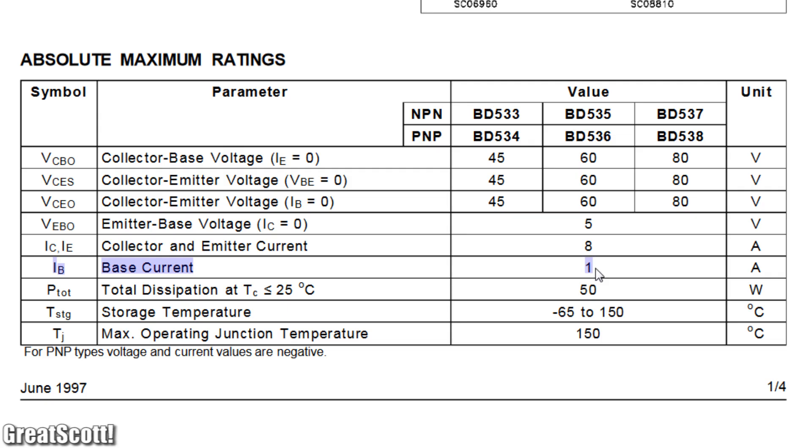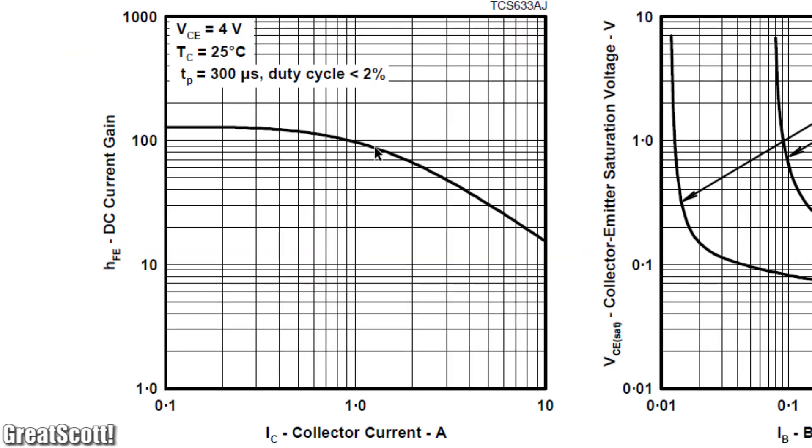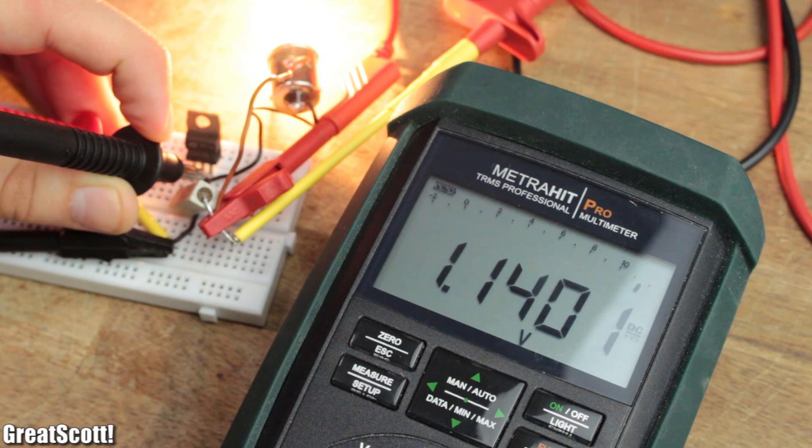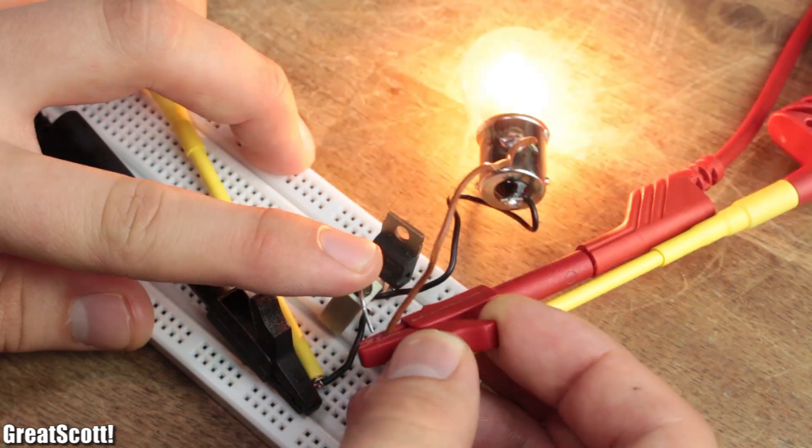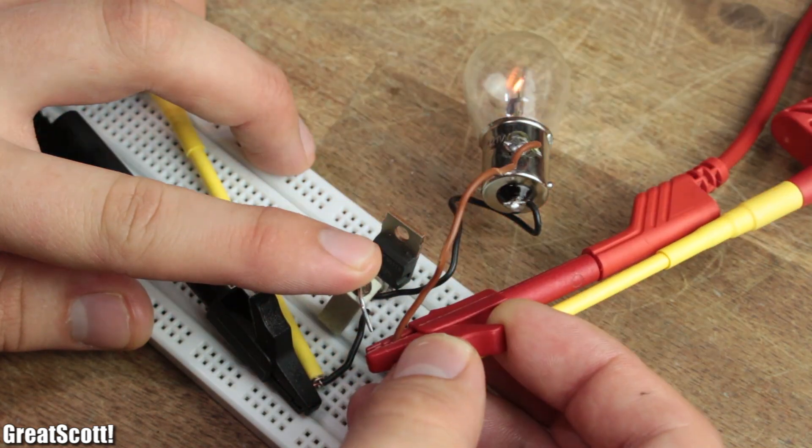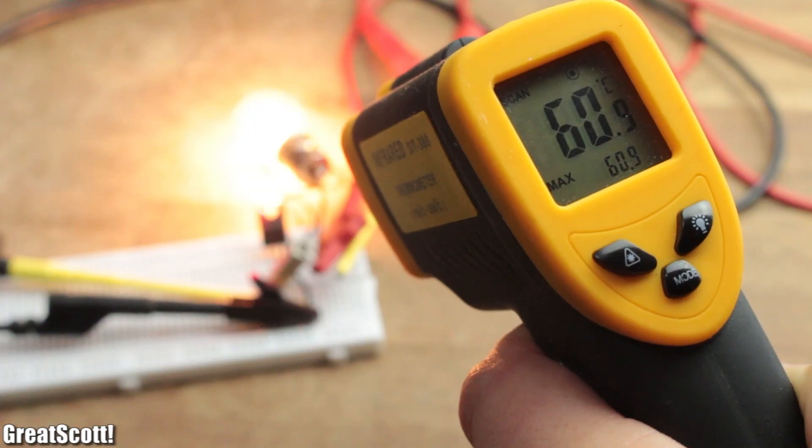To do that, I needed to get closer to the maximum rated base current of 1 amp, because the current gain always drops quite a bit with a higher collector current. But nevertheless, the circuit did work in the end, which was quite hot, literally.